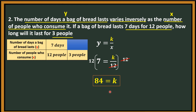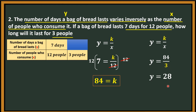Since we now have the constant, we can solve for the number of days a bag of bread lasts. Using the original equation Y = K over X, this time X is 3 and K is 84. So Y is equal to 84 divided by 3. And 84 divided by 3 is 28. Therefore, 28 days for 3 people.